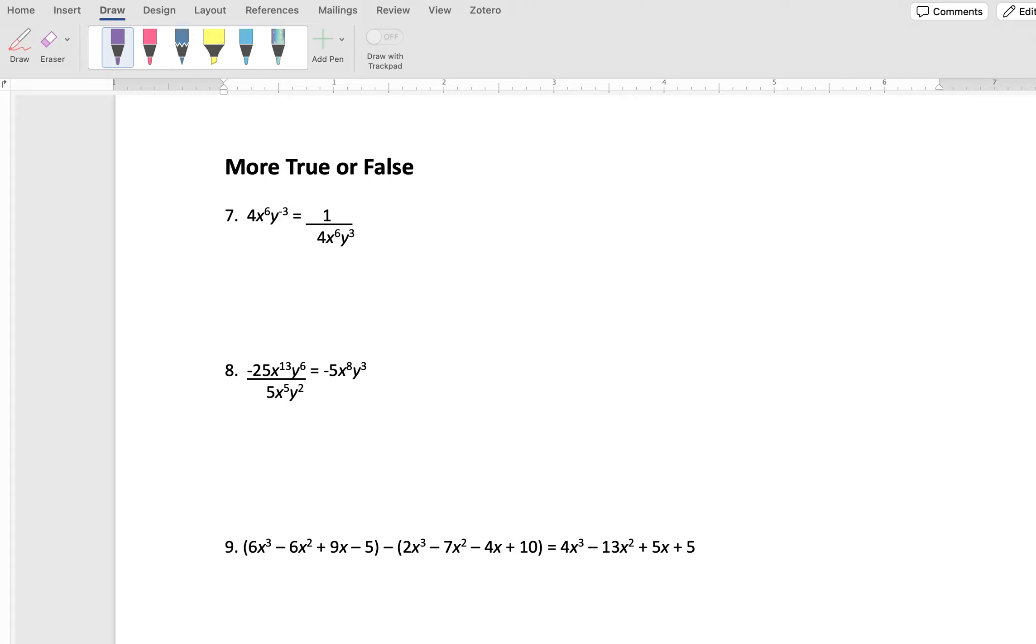In this video, we're going to go through some more true or false questions. These first couple of questions involve fractions with exponents. And so you can see here, we have 4x to the 6, y to the negative 3. Does that equal 1 over 4x to the 6, y to the positive 3?